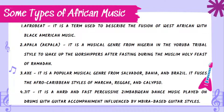Here are some types of African music. Number 1: Afrobeat — a term used to describe the fusion of West African with Black American music. Second, Apala, also known as Akpala — a musical genre from Nigeria in the Yoruba tribal style to wake up worshippers after fasting during the Muslim Holy Fest of Ramadan. Third, Axe — a popular musical genre from Salvador, Bahia, Brazil, that fuses Afro-Caribbean styles of marcha, reggae, and calypso. Fourth, Jit — a hard and fast percussive Zimbabwean dance music played on drums with guitar accompaniment influenced by Mbira-based guitar styles.